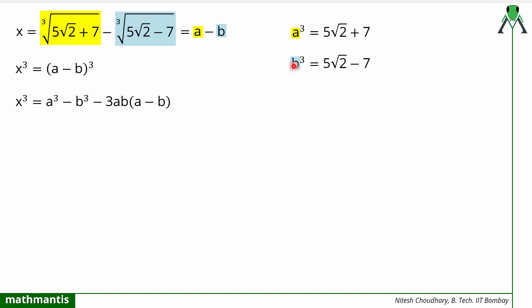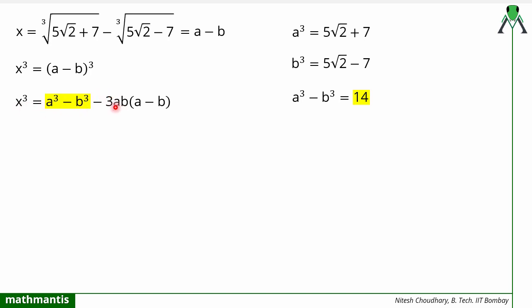We know both values a³ and b³, so we can easily find a³ - b³. That is nothing but 14, because the 5√2 terms cancel, and 7 minus (-7) becomes 7 + 7 = 14. So now we know this value is 14.